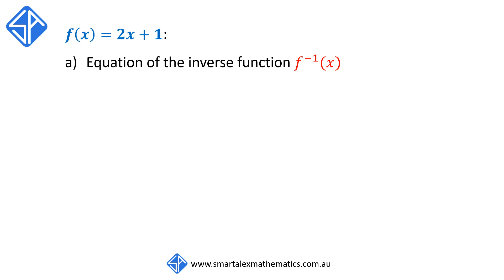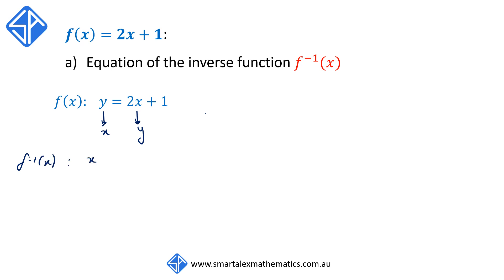For our first example, we've got the function f of x is equal to 2x plus 1. To find the equation of the inverse function, we start by writing f of x in terms of the variables x and y, so we can write f of x as y is equal to 2x plus 1. We then interchange the variables x and y so that y becomes x and x becomes y, giving us x is equal to 2y plus 1.